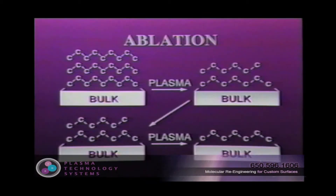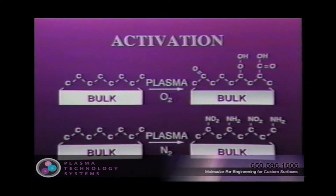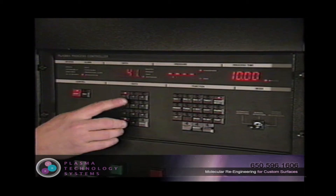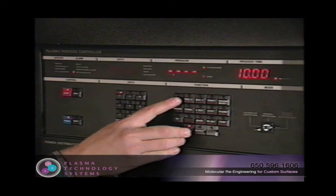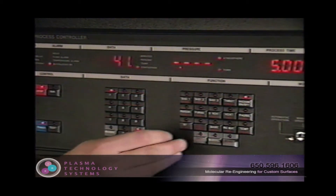Three competing molecular reactions alter the polymer simultaneously: ablation, the removal by evaporation of surface material, also referred to as etching; cross-linking, a connection of two or more parallel polymer chains; and activation, the substitution of atoms in the polymer molecule with chemical groups from the plasma. The effects of each are controlled through the gas chemistry and the process variables to create the desired change of surface chemistries and/or surface properties.